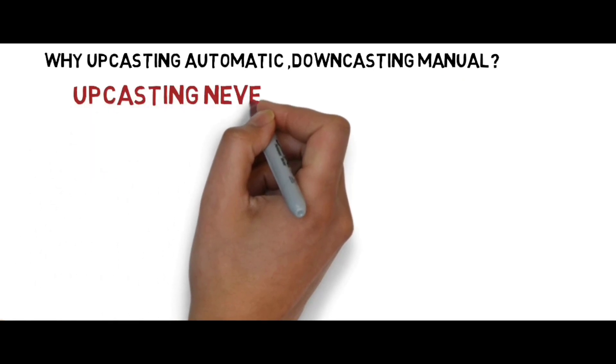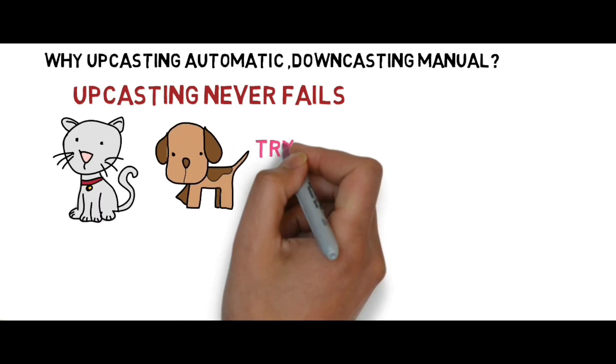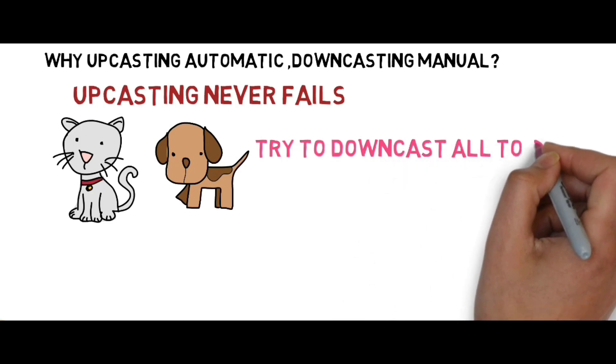I think you guys have a doubt - why is upcasting automatic while downcasting is manual? Well, upcasting can never fail. Let us assume you have a group of different animals. If you're trying to downcast all the animals to cat...